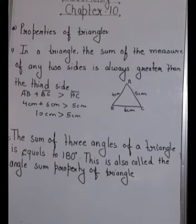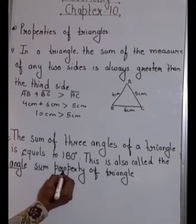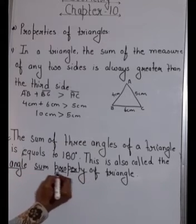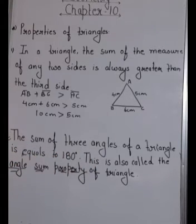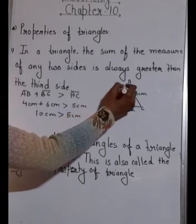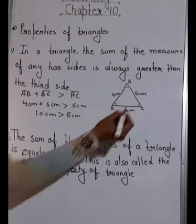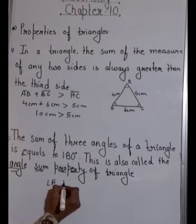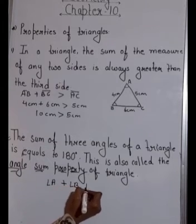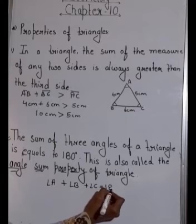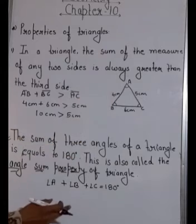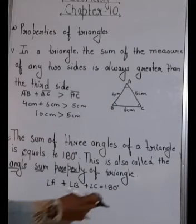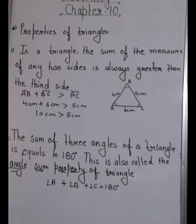The next is a very important property called the angle sum property. It states: the sum of the three angles of a triangle is always equal to 180 degrees. So angle A + angle B + angle C = 180°. The sum cannot be more than 180 or less than 180 — it is always exactly 180 degrees.